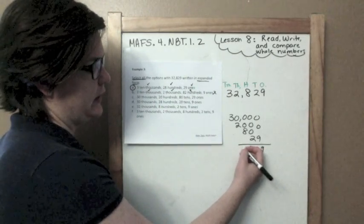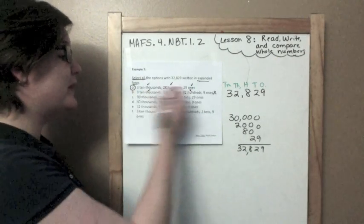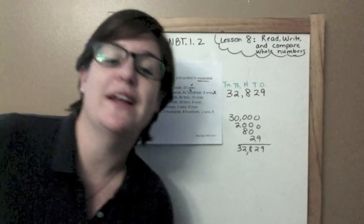Twenty-nine ones. Twenty-nine, and if we add that up, 9, 2, 8, 2, 3, thirty-two thousand, eight hundred twenty-nine. So, that would be a correct answer. It's kind of tricky, so you may need to rewind that and see what I did. All right.